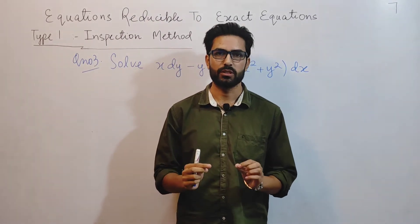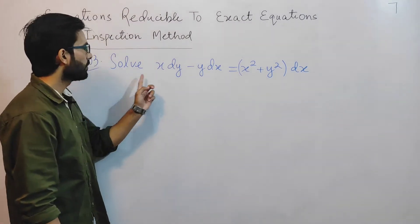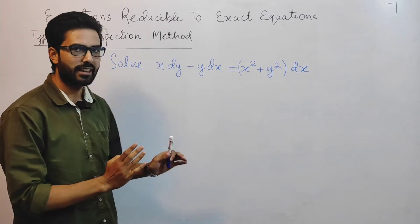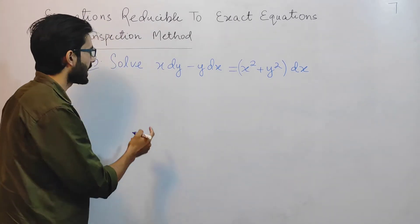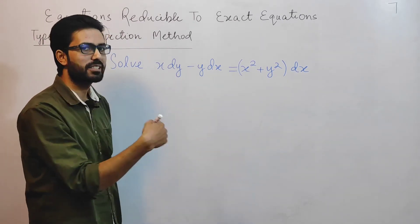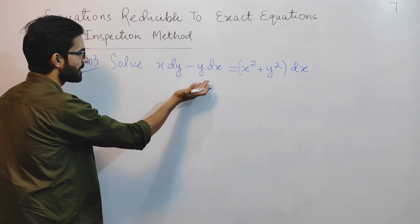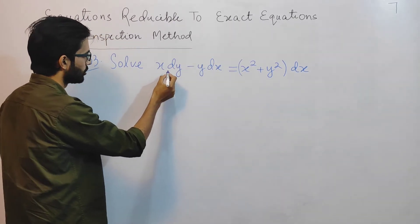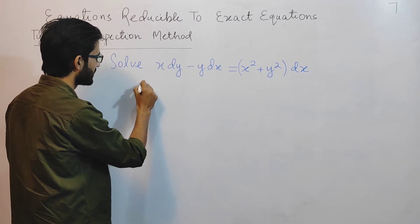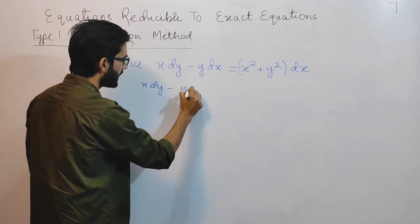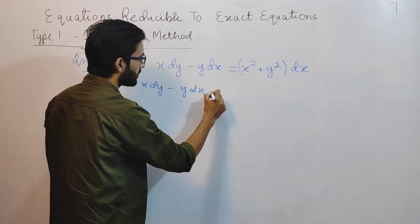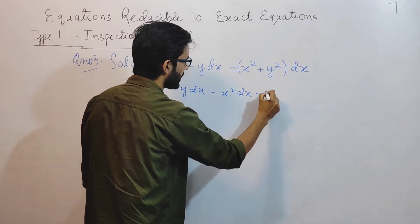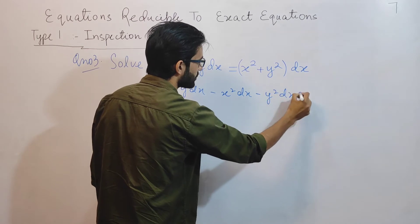So the final question, question number 3: Solve x dy minus y dx is equal to (x² + y²) dx. I know this is not exact, but I will check it again for exactness. I will write all the dy and dx terms on one side, leaving 0 on the other. This becomes: minus y dx minus x² dx minus y² dx plus x dy = 0.